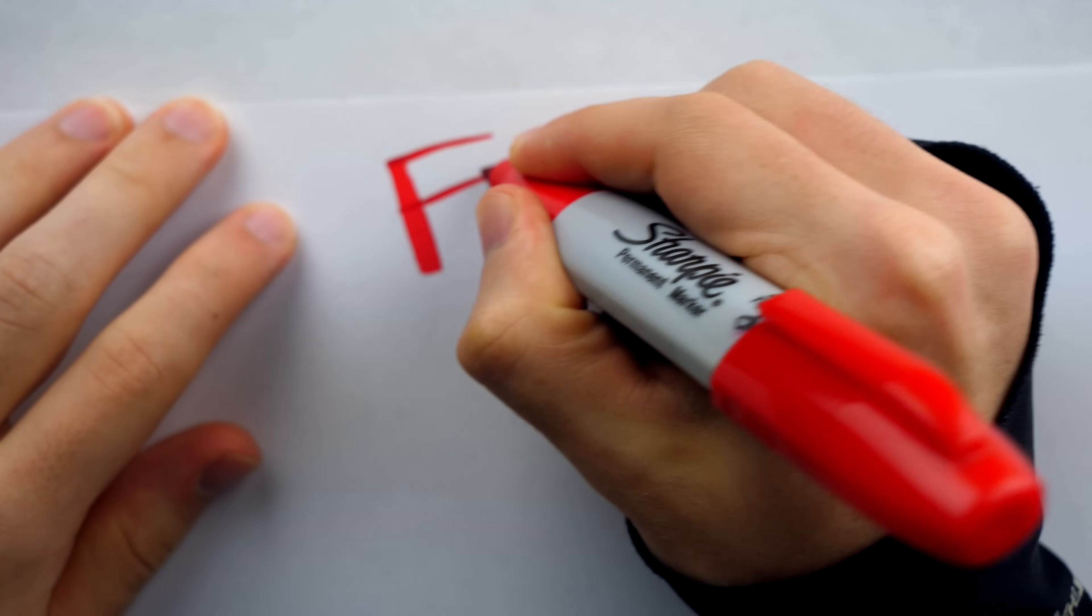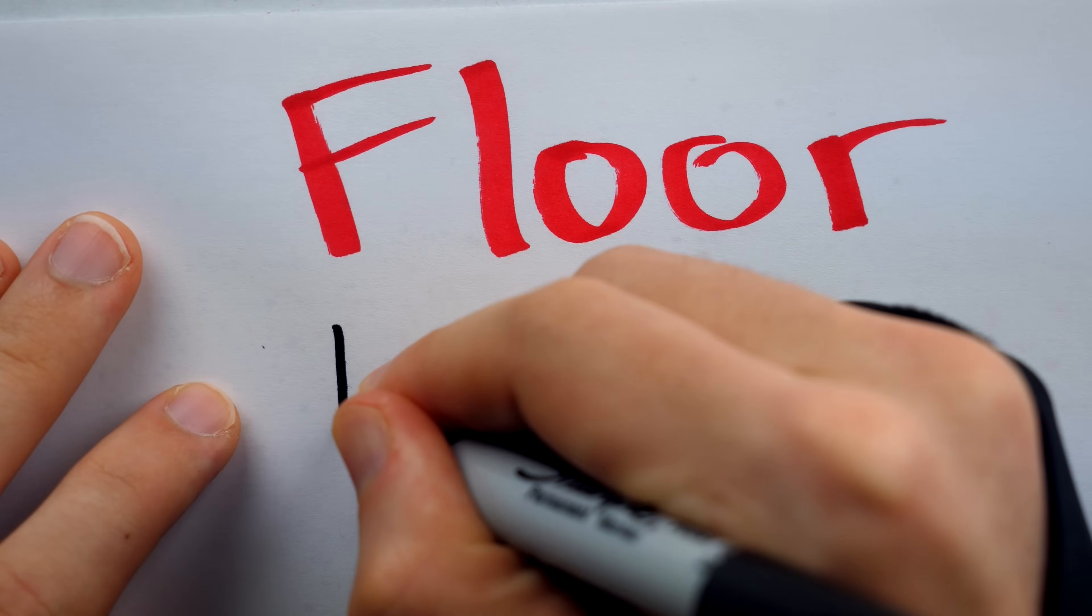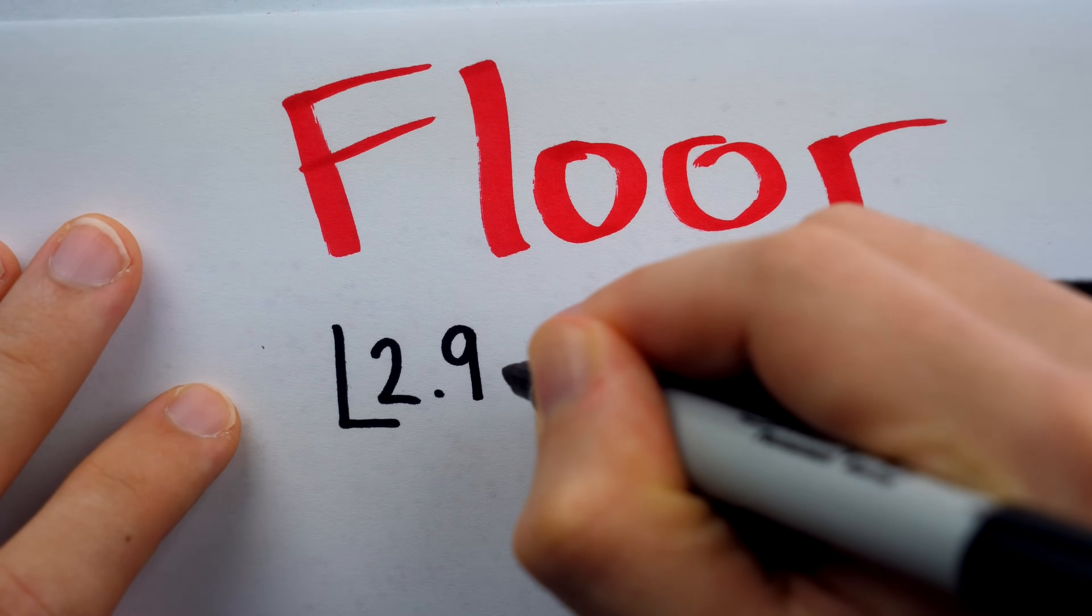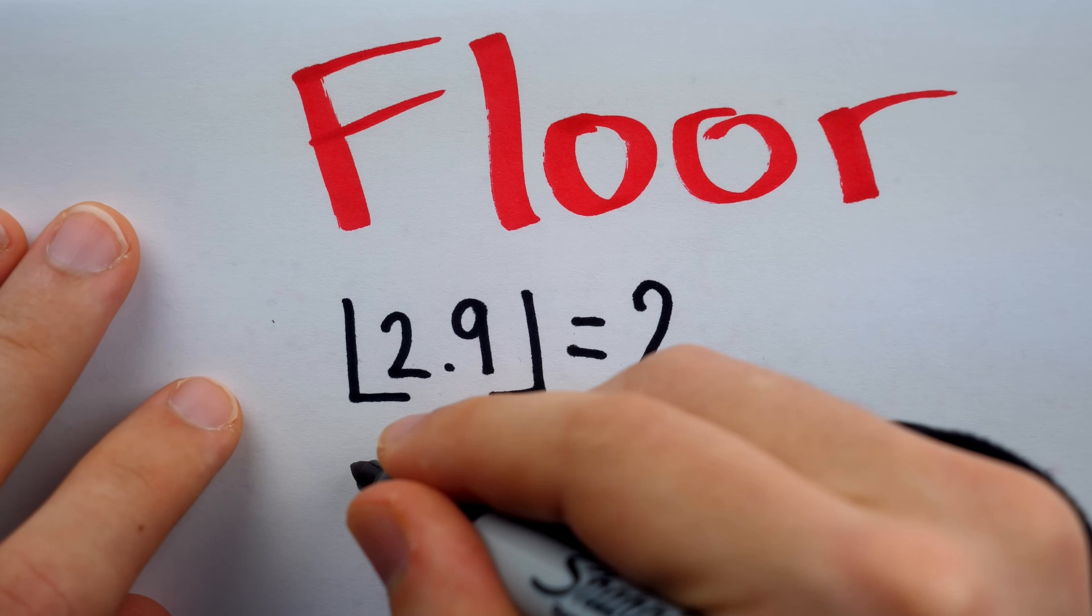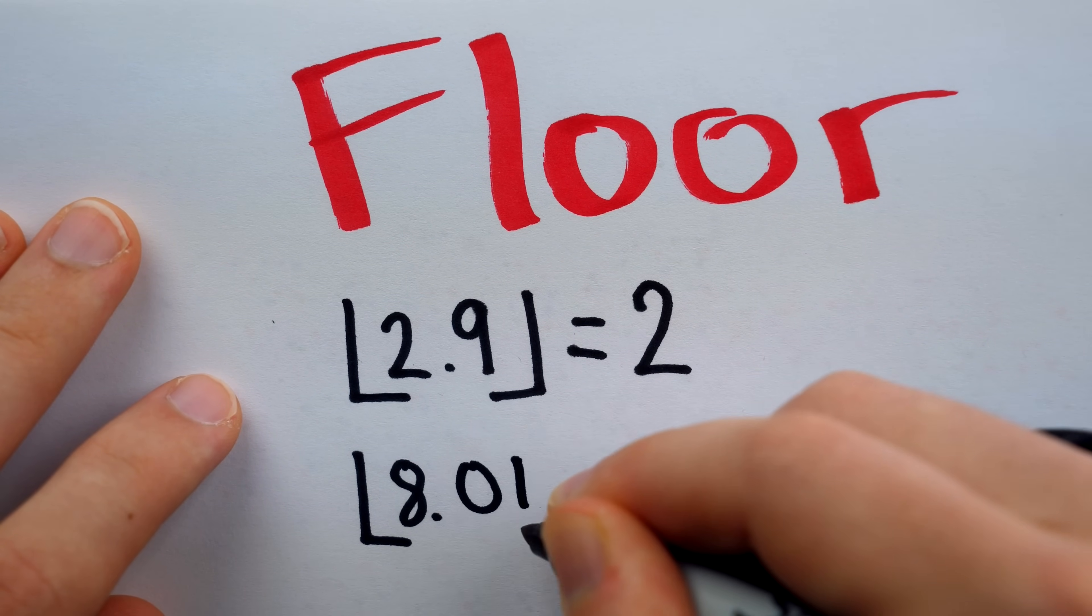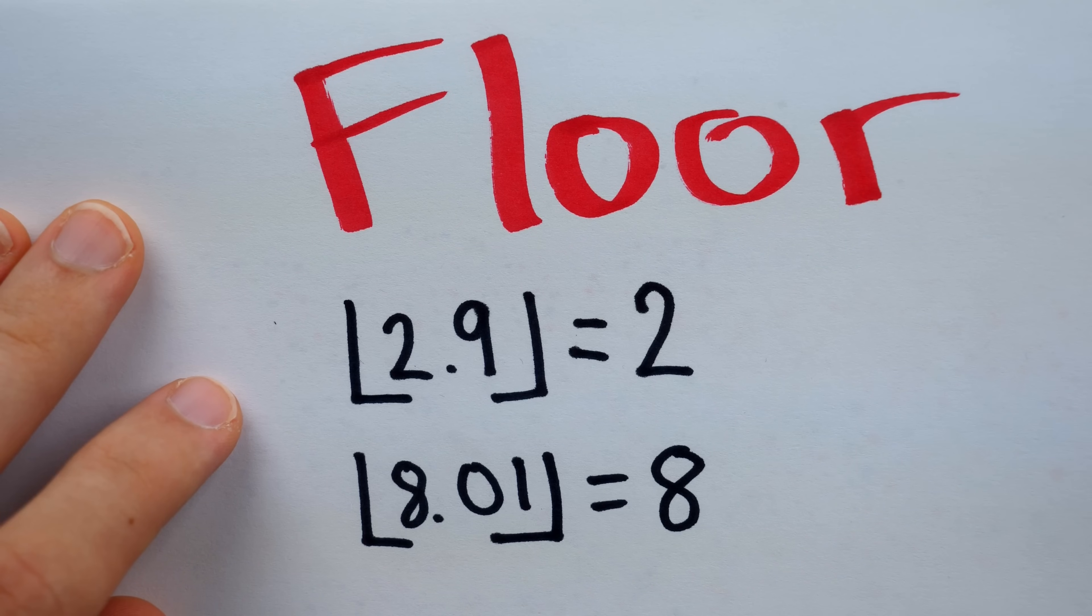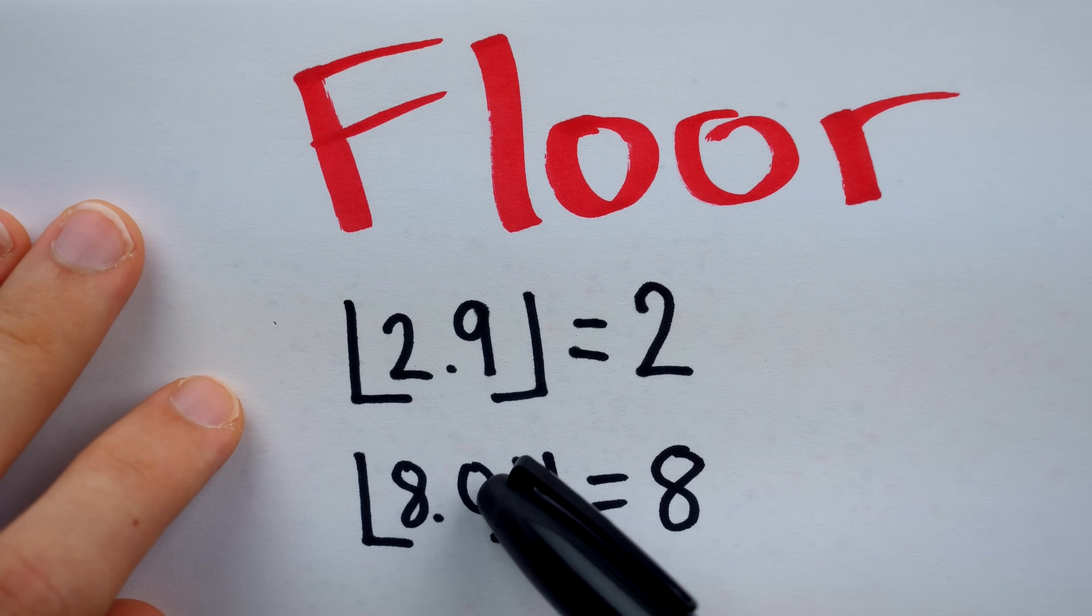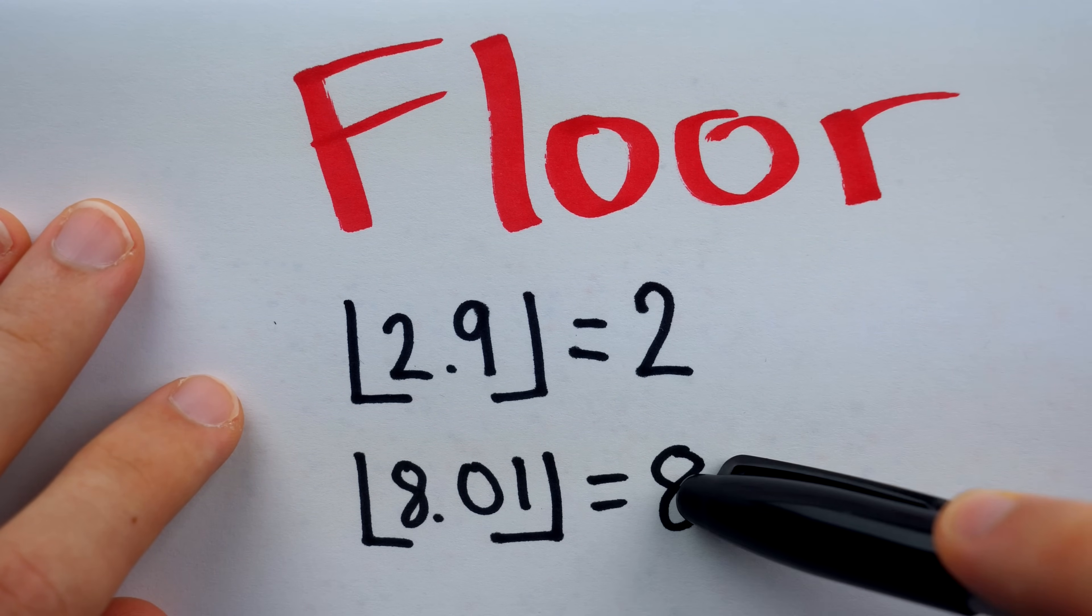One way to round is with what we call the floor function. The floor function just brings a decimal down to the nearest integer. For example, the floor of 2.9 is 2. It just cuts off the fractional part. The floor of 8.01 just cuts off the fractional part. This is equal to 8. Whether we would traditionally round it up like 2.9 or down like 8.01, the floor just always rounds down.